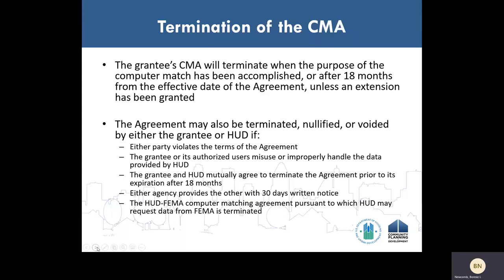The computer matching agreement is valid for 18 months and will terminate after 18 months from the effective date or when the purpose of the computer match has been accomplished, whichever comes first. If an extension has been requested and granted, the agreement will terminate at the end of the 12-month extension. The agreement may also be terminated, nullified, or voided by either the grantee or HUD if either party violates the terms of the agreement or the authorized user misuses or improperly handles the data provided by HUD. The agreement will also be terminated if the grantee and HUD mutually agree to terminate prior to the expiration date, either party provides 30 days written notice, or if the HUD-FEMA computer matching agreement is terminated.